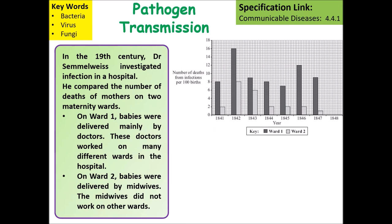The first practice question asks about the work of Semmelweis. In the 19th century, Dr. Semmelweis investigated infection rates in hospital wards. He compared two wards: in one ward midwives did not wash their hands, and in the other they did. Compare and explain those results using the graph shown.